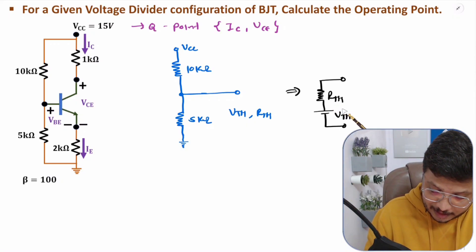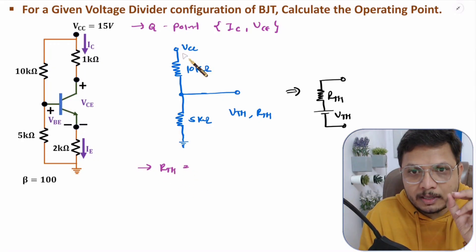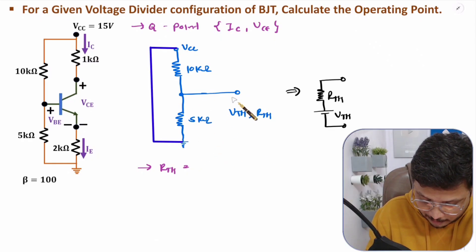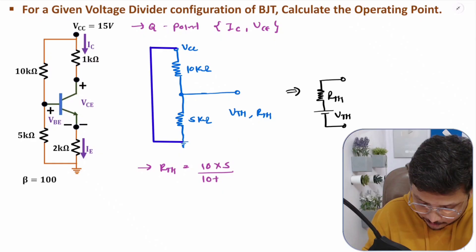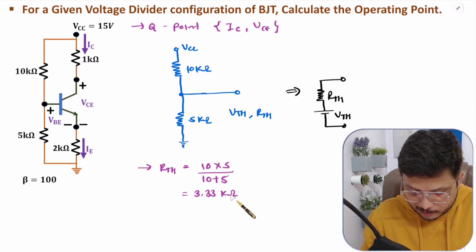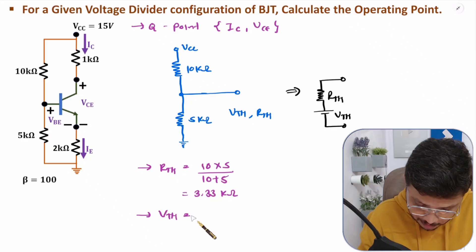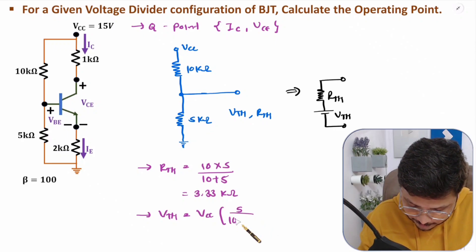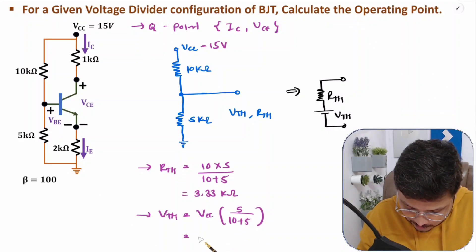To find RTH, ground all DC voltage supplies — so VCC is grounded. RTH is the resistance across the two terminals: RTH = 10 parallel with 5 = (10 × 5) / (10 + 5) = 50/15 = 3.33 kΩ. For VTH, using the voltage divider rule: VTH = VCC × R2 / (R1 + R2) = 15 × 5 / 15 = 5 volts.